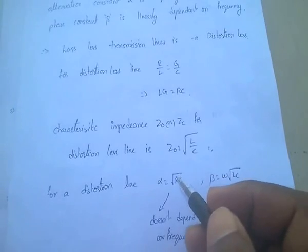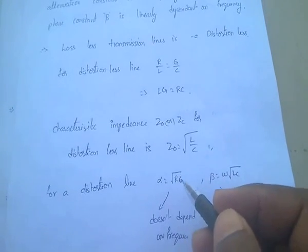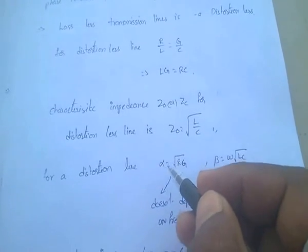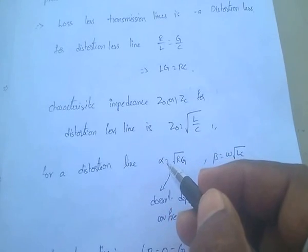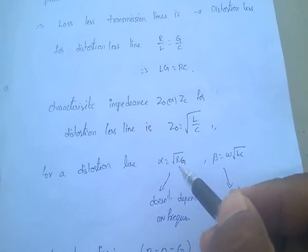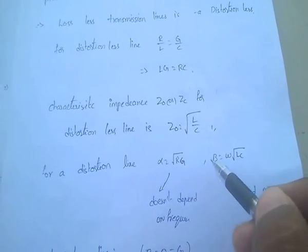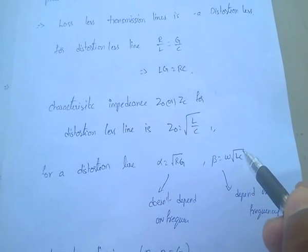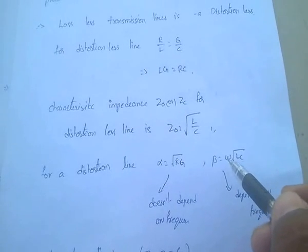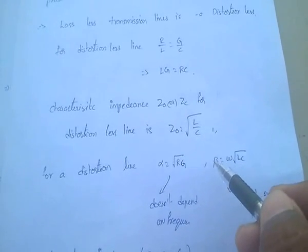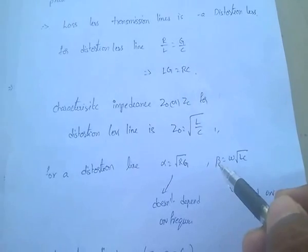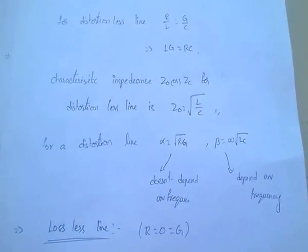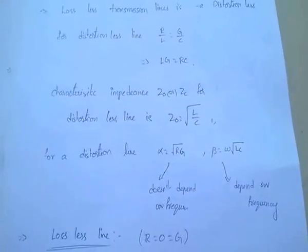R and G are both independent of frequency, so the alpha value has no frequency term — attenuation constant does not depend on frequency. And beta, the phase constant, equals omega into root LC. Since omega depends upon frequency, the phase constant beta is dependent on frequency.